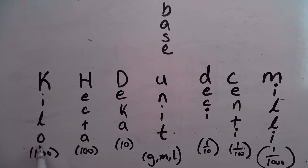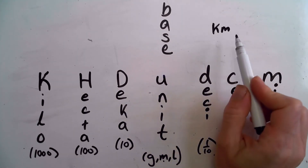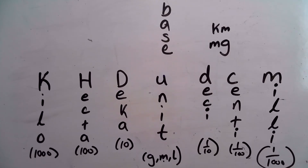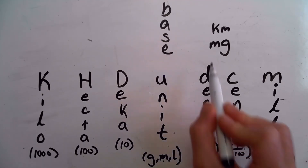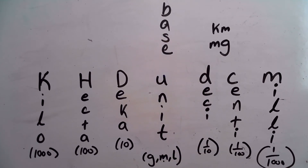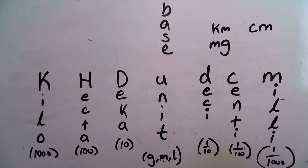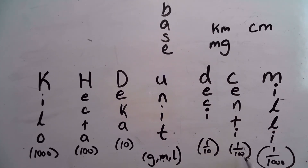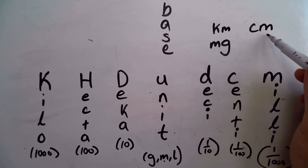For example, we can put the prefix kilo in front of any of these units and we're talking about 1000 of those units. So a kilometer would mean we're talking about 1000 meter-long pieces. Whereas if we wrote milligrams, we're talking about if we took a gram — which is not very big, about the weight of a dime — and cut that weight into 1000 pieces, that is a milligram. Another example would be a centimeter: the prefix centi tells you we're going to cut that meter into 100 different slices to make a centimeter.